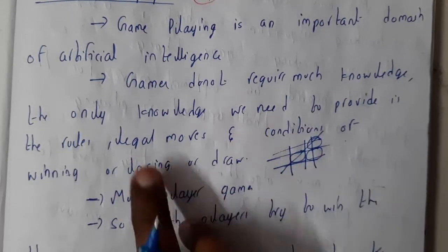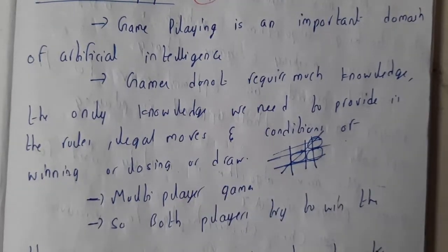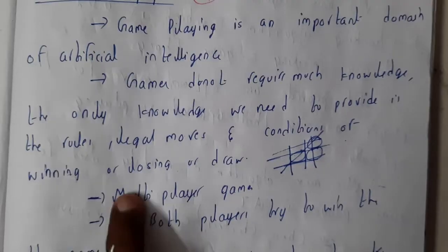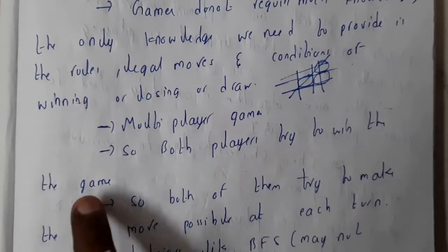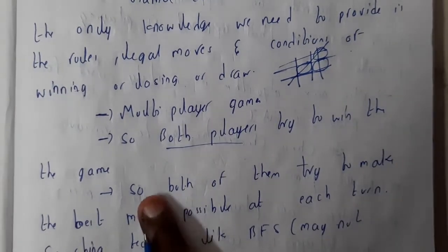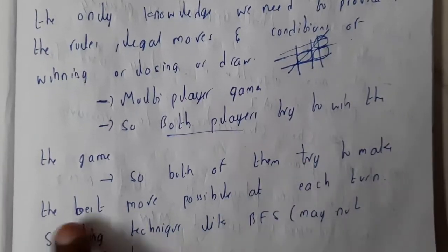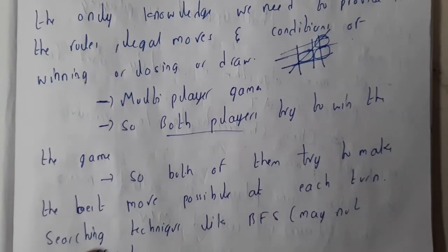Legal moves you'll be finding in chess - like horse will be going in an L shape. These all belong to multiplayer games. Both players try to win the game, so one player will be you and the other will be the computer. Both of them try to make the best moves possible at each turn.